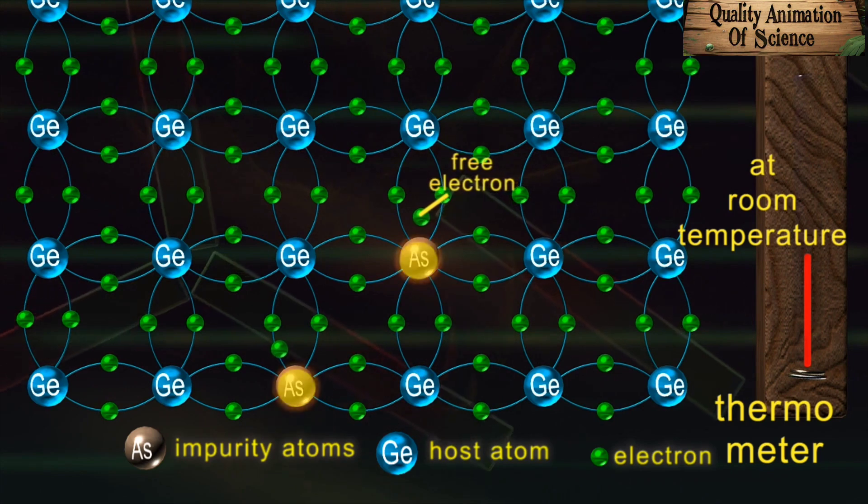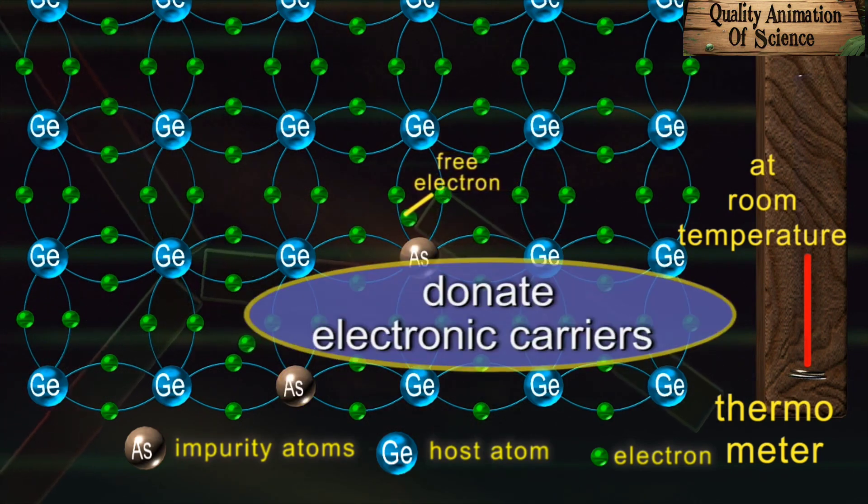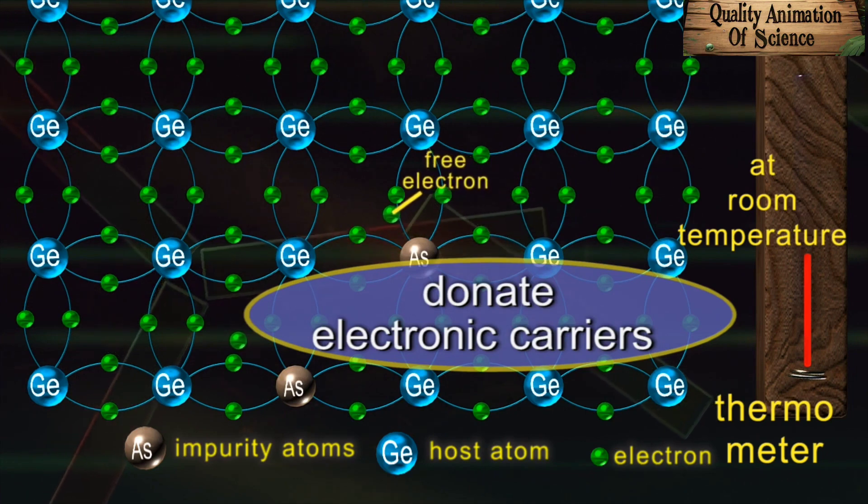Thus, the pentavalent impurity atoms donate electronic carriers to the crystal to conduct electricity. So they are called donors.